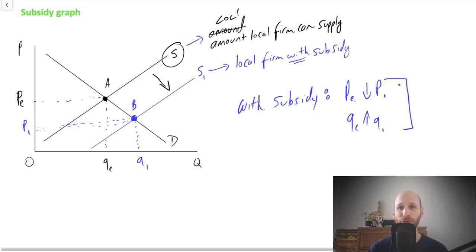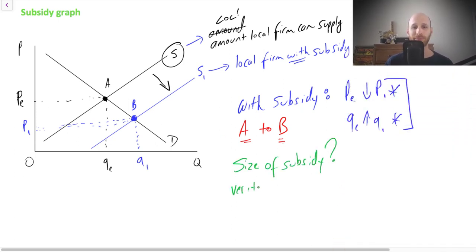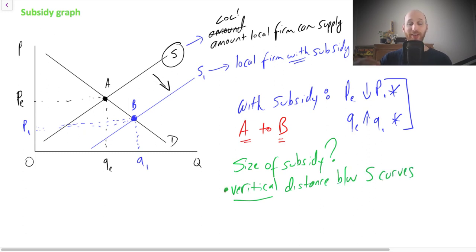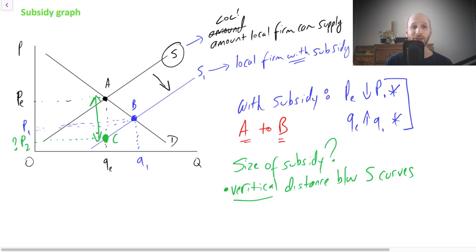S1 is the amount that the local firm can now supply with the subsidy. With the subsidy, firms are able to reduce their price and supply more, and we can see that in the move from point A to point B. Now there's one more thing to work out: how do we know what the size of the subsidy is? The size of the subsidy is the vertical distance between the supply curves.